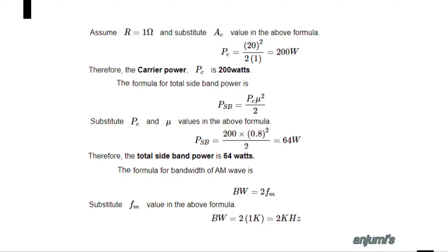The formula for total sideband power is: P_sideband = PC × μ² / 2. Substituting the values: PSB = 200 × 0.8² / 2 = 64 watts. Therefore, the total sideband power is 64 watts. The formula for bandwidth of AM is: bandwidth = 2 × fm = 2 × 1 kHz = 2 kHz.